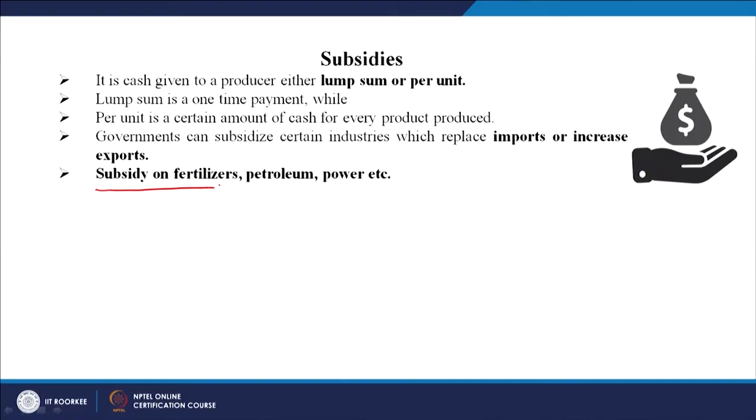Some of the subsidies in India are on fertilizers, petroleum products, and power. For example, power given to farmers in Punjab and some other states is highly subsidized — sometimes free or very low cost. The rest of the cost is borne by the government, and this is the subsidy given by the government.